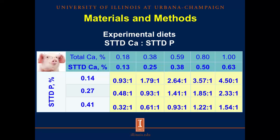This resulted in 15 different digestible calcium to digestible phosphorus ratios. As the concentration of calcium increases, the ratio also increases, but as the concentration of phosphorus increases, the ratio decreases. So we have a range from 0.32 to 1 up to 4.50 to 1, and the diet with the NRC values has a ratio of 1.41 to 1.